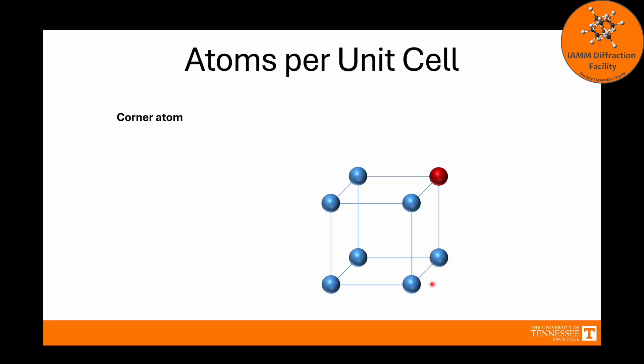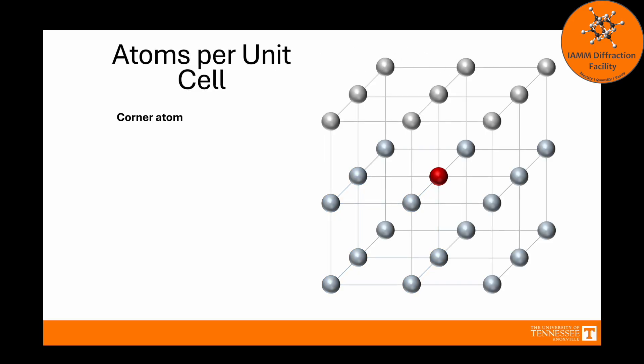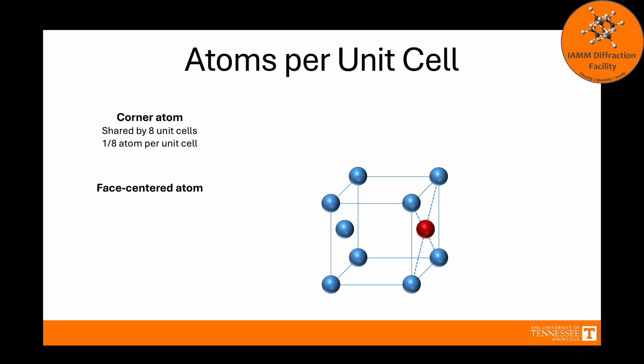Finally, let's go through and determine how many atoms there are per unit cell for these different Bravais lattices. First off, if you have a corner atom, regardless of Bravais lattice type, that is shared amongst many different unit cells. We have four on the bottom that it is shared among and four unit cells on the top. This means that it is shared by a total of eight unit cells. Therefore, each corner atom contributes one-eighth of an atom per unit cell. For a face-centered atom, it is sitting in this one unit cell shown here and also this unit cell over here, which means that it is shared by two unit cells and contributes half an atom per unit cell. Finally, a body-centered atom is completely contained within a single unit cell, so it contributes one atom per unit cell.